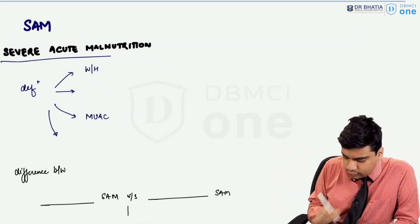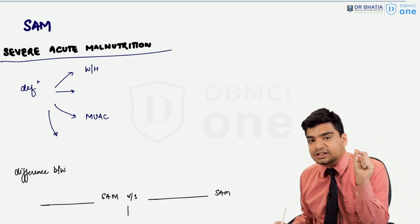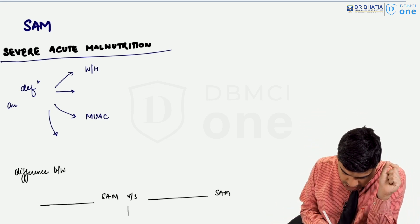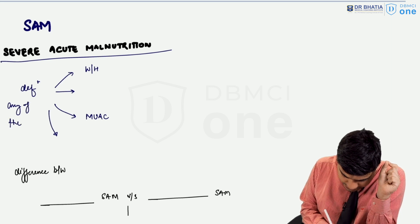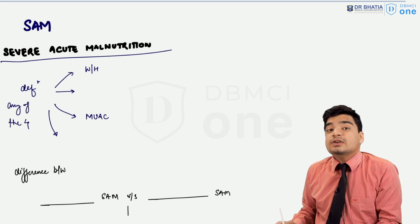SAM stands for severe acute malnutrition. Severe acute malnutrition has four criteria. If any of these four criteria is present, then you can say that person is having SAM.